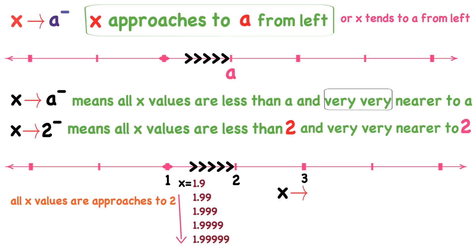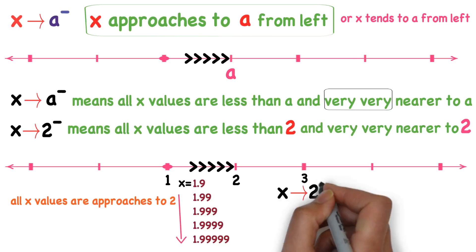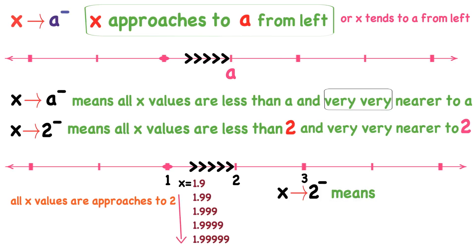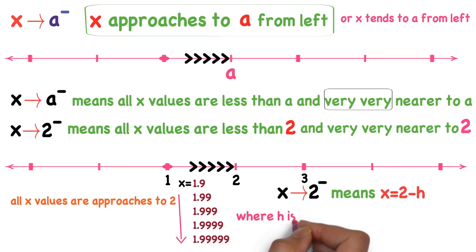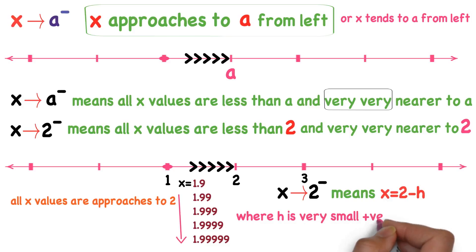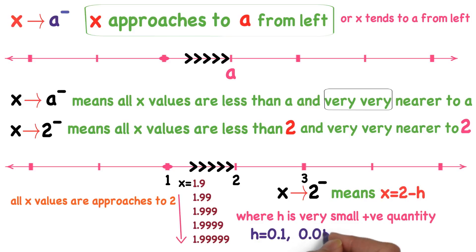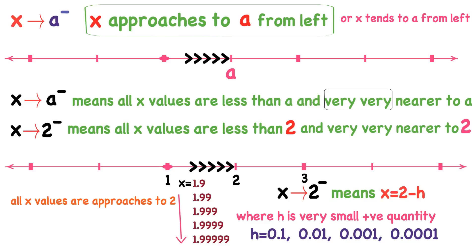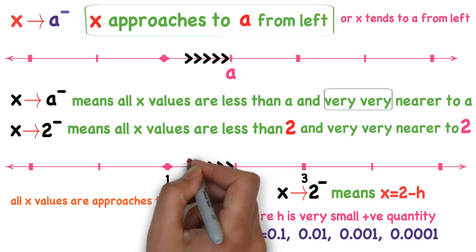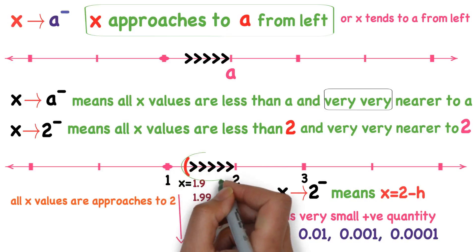In other words, x approaches to 2 from left means all x values are in the left neighborhood of 2. That means x equals 2 minus H, where H is a very small positive quantity. For example, if H is 0.1, substituting in x = 2 − H gives 1.9. If H is 0.01, you get x = 1.99.